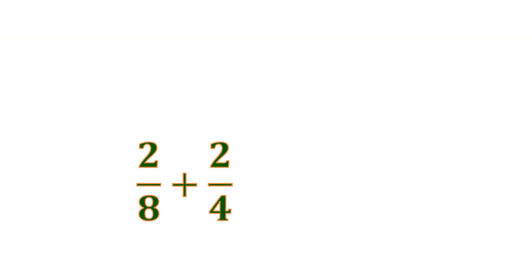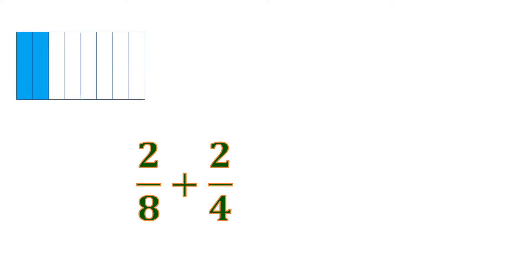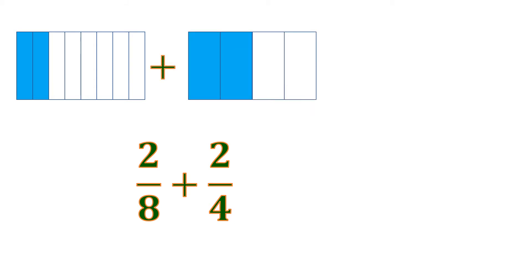Let's have another example. We have 2 eighths plus 2 fourths. These two fractions are considered dissimilar fractions because they don't have the same denominator — it's 4 and 8. Now let's visualize: 2 eighths is 2 shaded parts out of 8, plus 2 fourths or 2 shaded parts out of 4. We cannot combine them because they don't fit with each other.